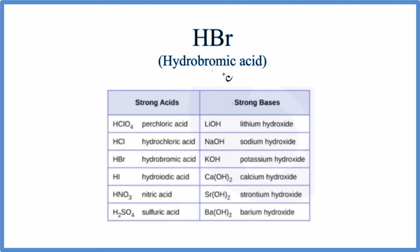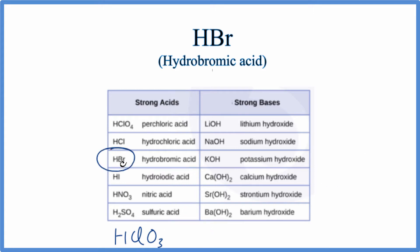There are a few ways to do this. The first way is just to memorize the strong acids and strong bases. These are the common strong acids and bases you'll see in general chemistry — sometimes you'll also see HClO3 on this list. You could just memorize these and you'd see HBr is a strong acid. I do recommend you memorize these; it'll make things a lot easier in chemistry.